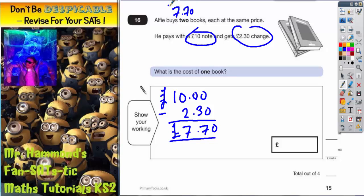Okay, now the crucial thing here is they were the same price, so we've got to half that seven pounds seventy to get the cost of one book. So we're looking to half seven pounds seventy.